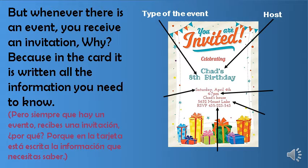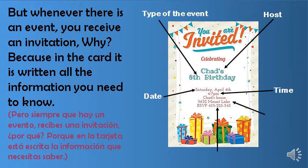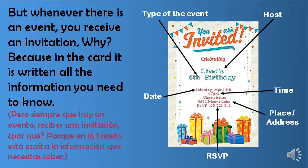The name of the host — who is inviting you? Chad. The date — this will be on Saturday, April 4th. The time — from 4 to 7 pm. The place and address — it will be at Chad's house, 5632 Mount Lake. And the RSVP — in this case, you have to call at 435-223-543 to confirm your attendance.